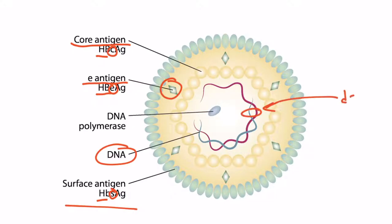There are two strands — double-stranded for most of the circle — and then one section is single-stranded, hence partially double-stranded. And there is also the DNA polymerase within the capsid.